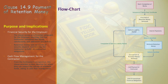Picture a flowchart, vibrant in color, each block a step in a critical financial dance. Our journey starts with the completion of works, marked in confident pink — the opening act in our retention money drama. Then comes the green block: the issuance of the taking-over certificate, where the employer acknowledges the completion of the works. In the yellow block, we see the first half of the retention money released — a significant moment symbolizing partial financial closure.